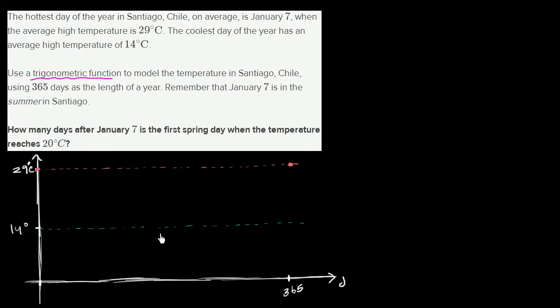If the average high temperature is 29 degrees Celsius on that day, the average high temperature is going to be 29 degrees Celsius on that day. Now, we're using a trigonometric function, so we're going to hit our low point exactly halfway in between. So our function is going to look like this. Let me just draw the low point right over there. And then this is a high point, a high point right over there.